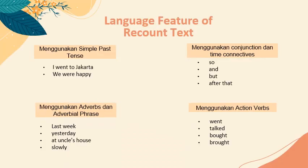Yang pertama menggunakan simple past tense. Contohnya di sini: 'I went to Jakarta' — 'went' itu verb kedua, yang mana lampau, simple past tense. And then 'we were happy' — 'were' juga sama. Yang kedua menggunakan conjunction atau kata hubung, contohnya 'so', 'and', 'but'. Dan menggunakan time connectives, yang mana digunakan untuk mengurutkan waktu, contohnya 'after that', 'and then', 'finally'.